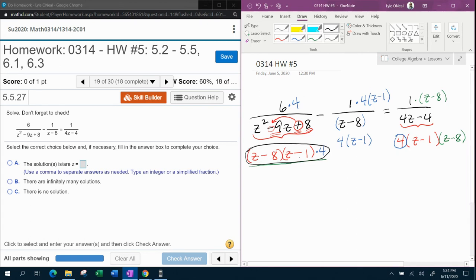I've got a 4, z minus 1, z minus 8. In the middle, I've got a 4, z minus 1, z minus 8. And in the back, I've got a 4, z minus 1, z minus 8. So remember, when all the denominators match, you can cancel them out.